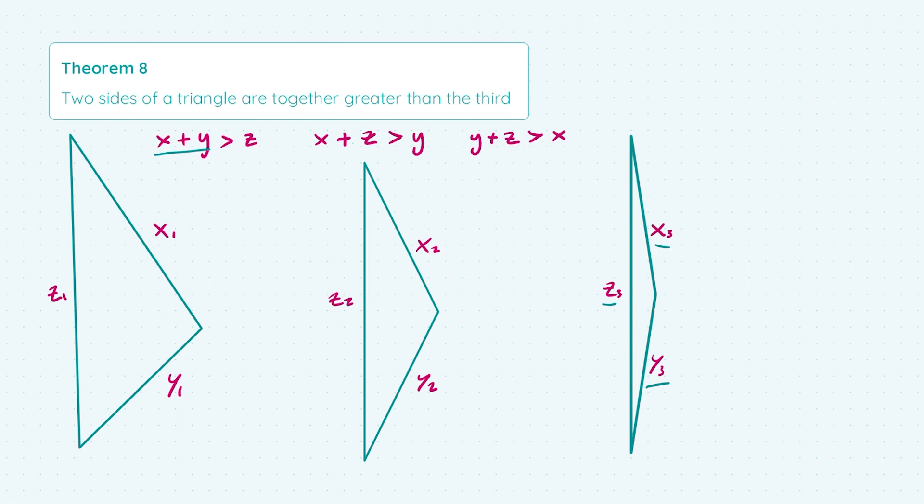So for any triangle, regardless of how close it is to becoming like a line, x plus y is always going to be greater than z in this case, and of course the other two inequalities will always hold as well. So that is it for this theorem and I'll see you next time.